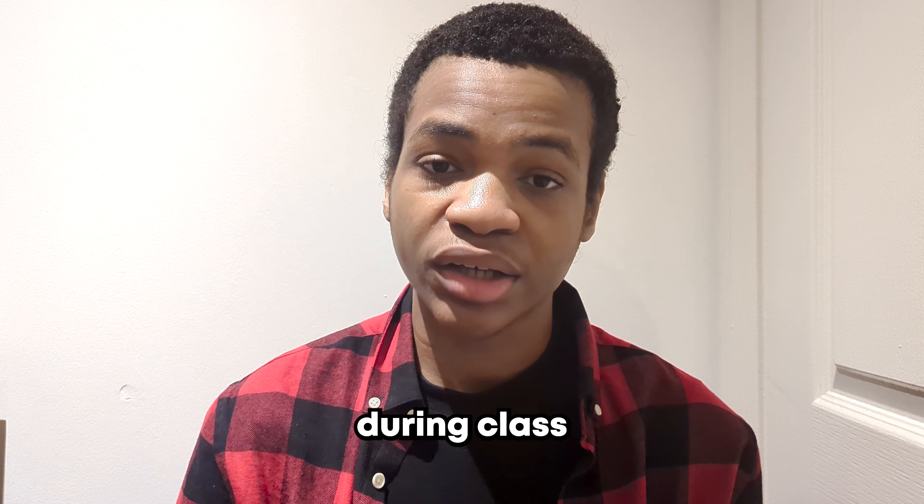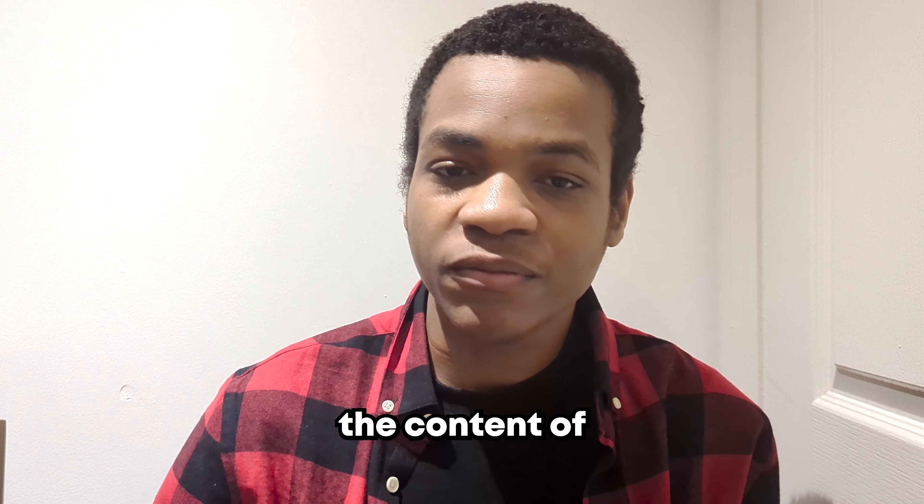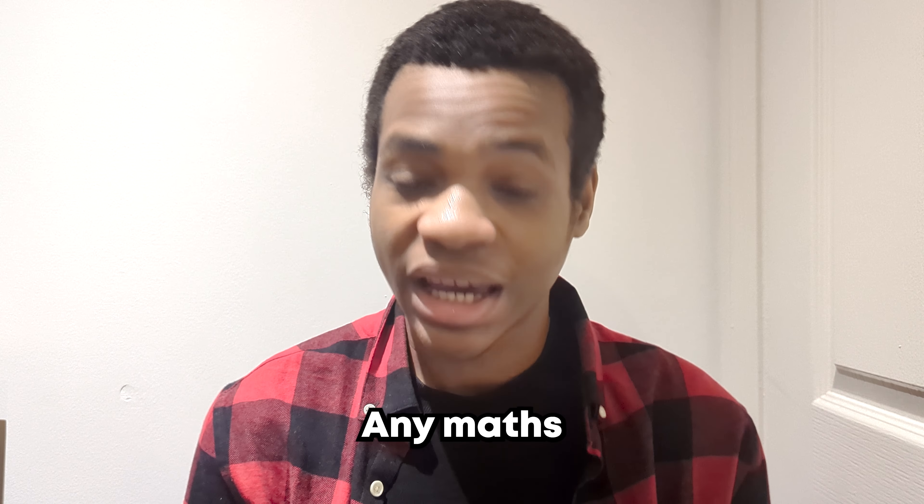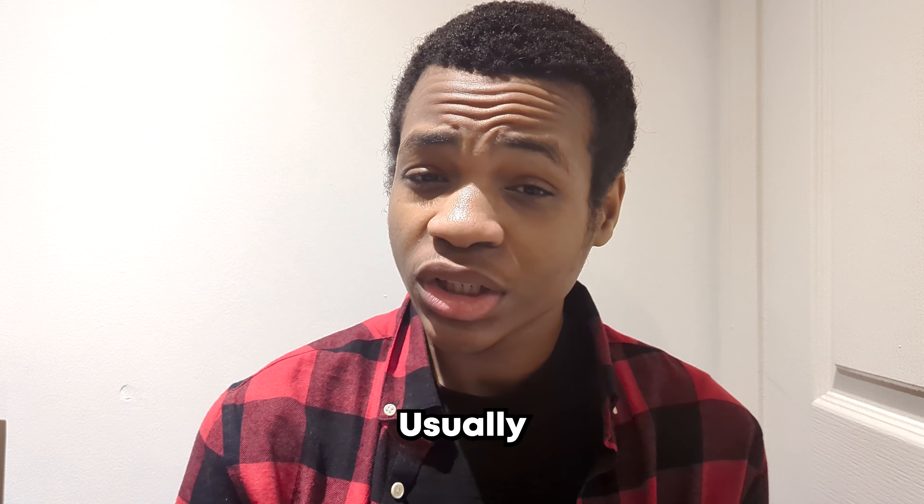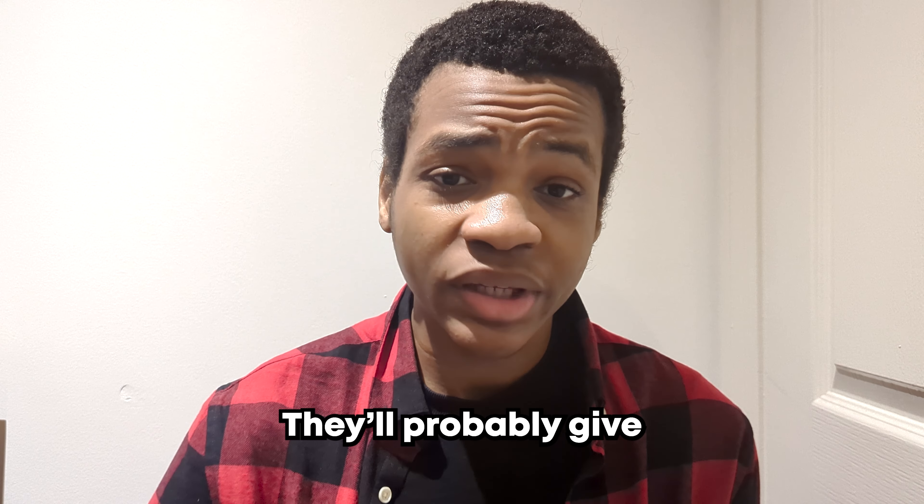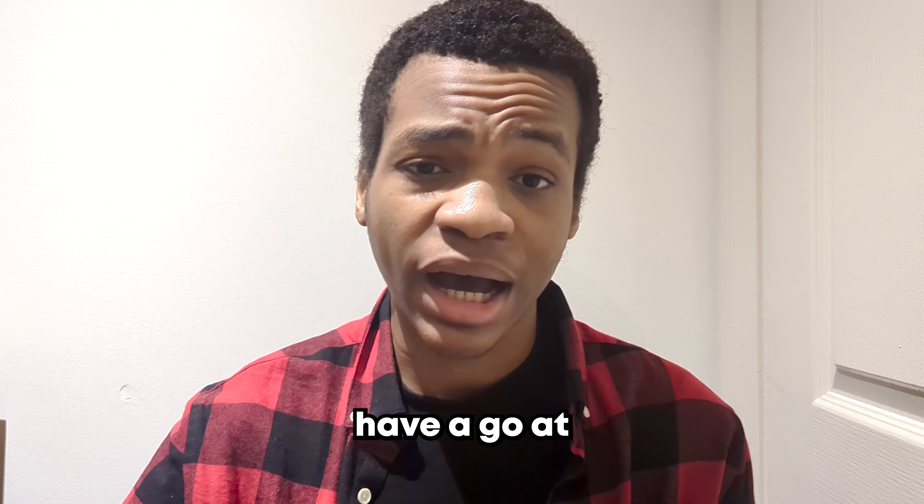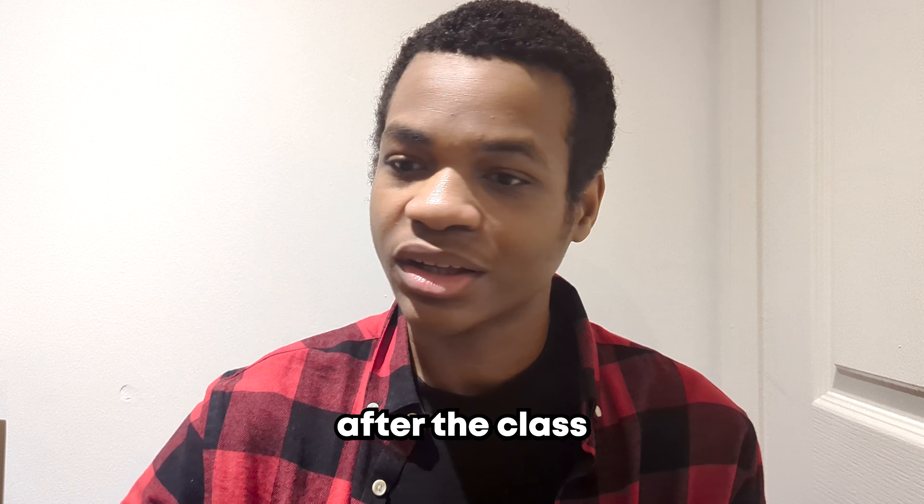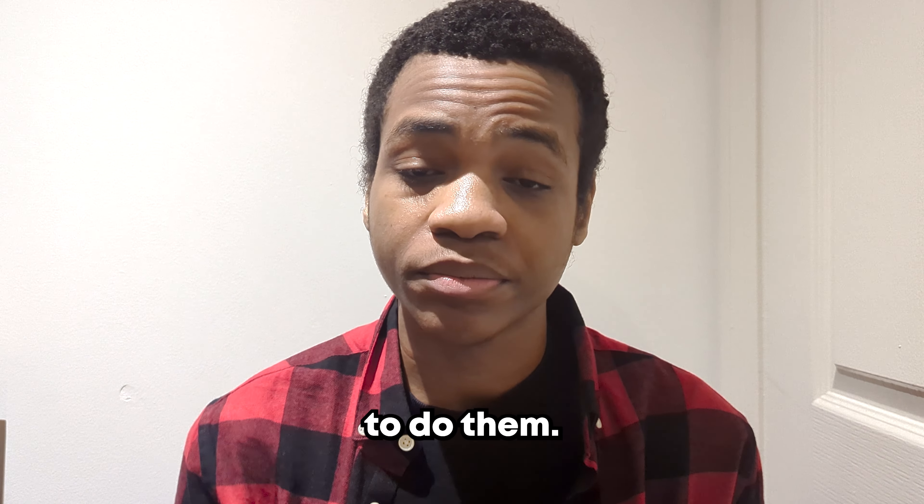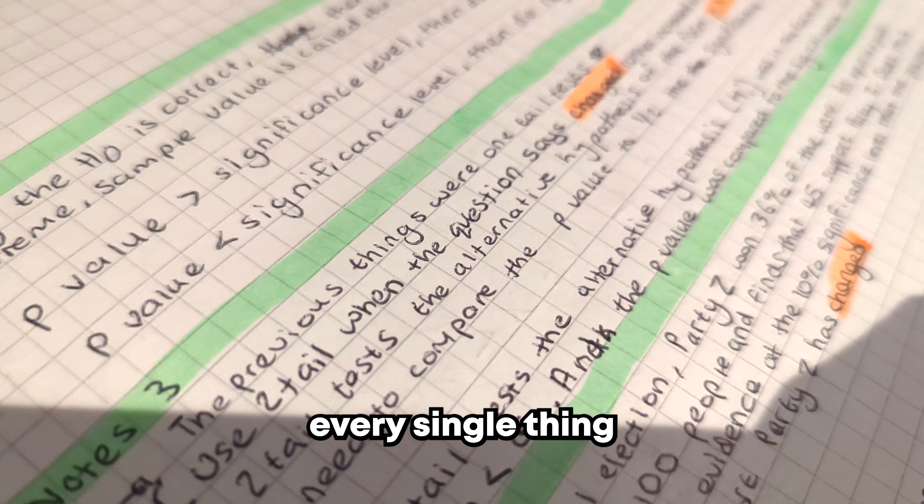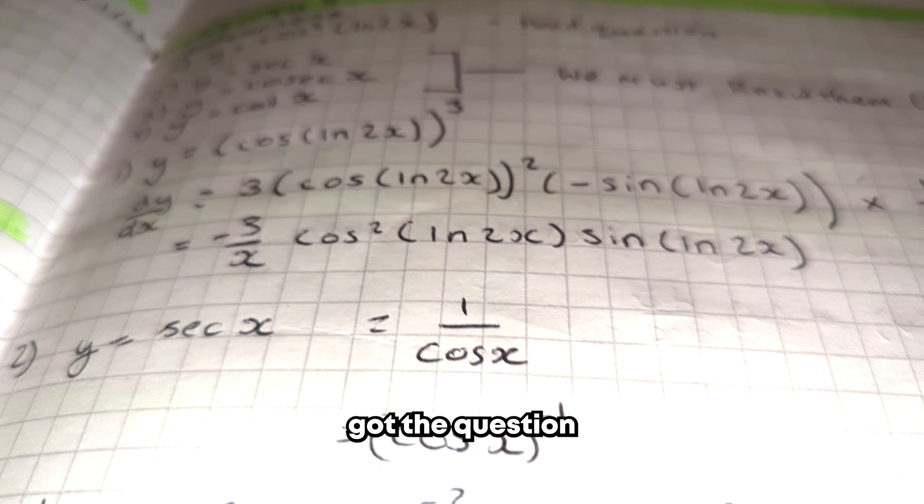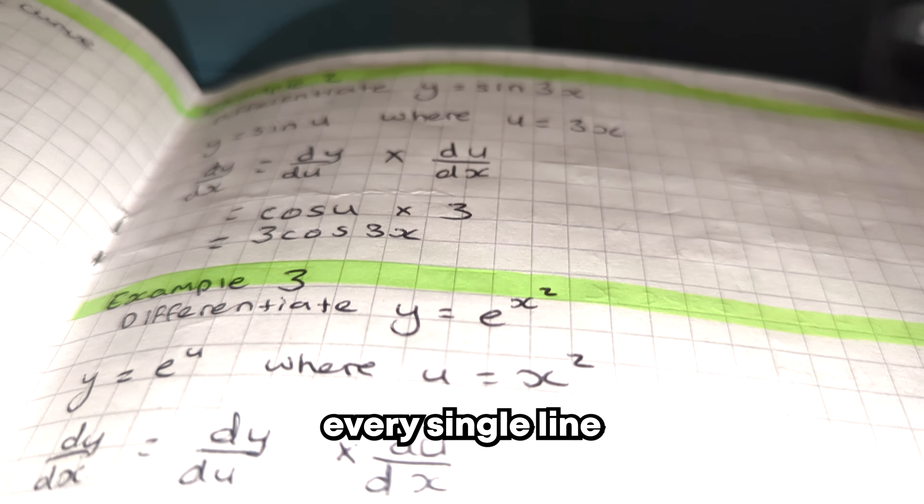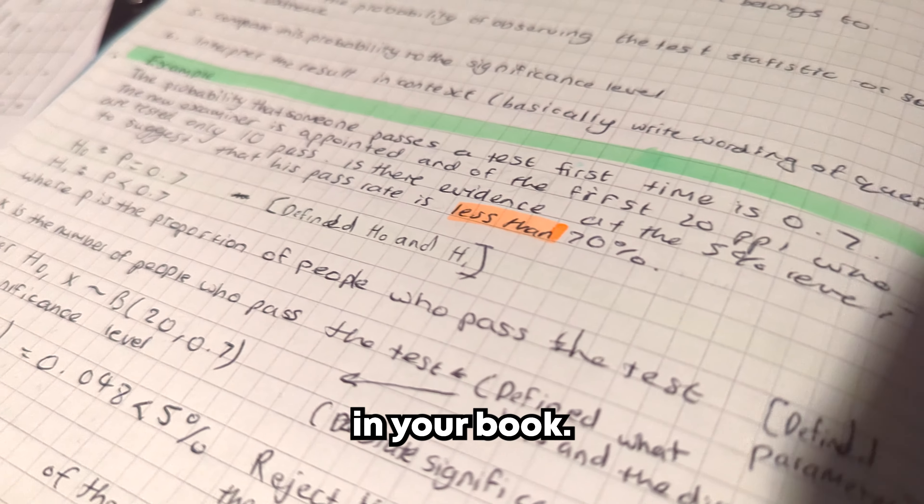The first way is that during class your teacher will teach you the content of some maths. It could be maths you've done before or maths that is new to you. Usually in your classes they'll probably give some example questions for you to have a go at. And then they may possibly also go over those questions after the class has answered them and show you the right way to do them. If they do this you must write down every single thing they write down, even if you got the question completely right. Write down the question. Write down every single line of work that your teacher put and then highlight it in your book.